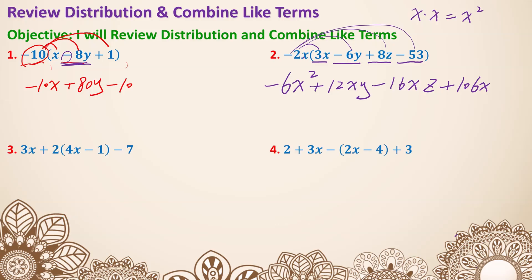Number 3, we still have distribution. The distribution is when a term is multiplied with a set of parentheses. In the middle we have 2 times 4x minus 1, so we distribute the 2. However, this 3x is not next to the parentheses, so we are not distributing that 3x, just the 2. I'm going to copy down the 3x in the front. 2 times 4x is 8x, and 2 times negative 1 is negative 2. We also have a negative 7 on the end.